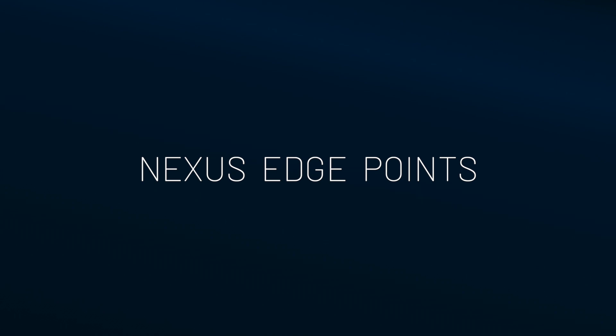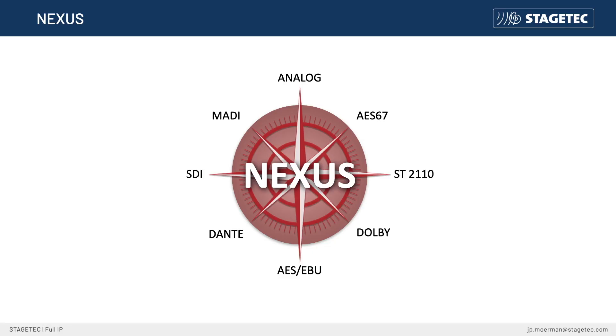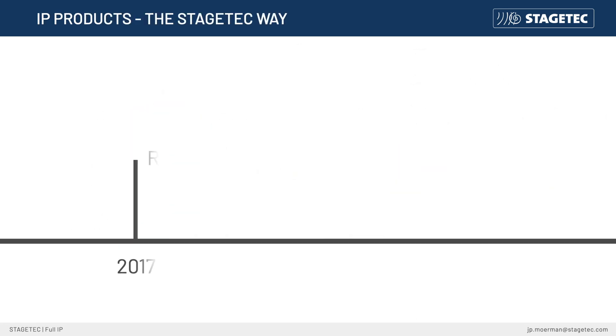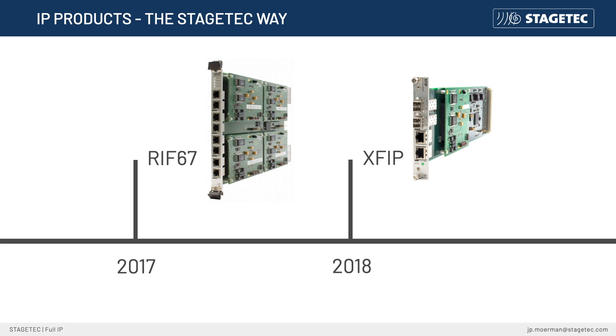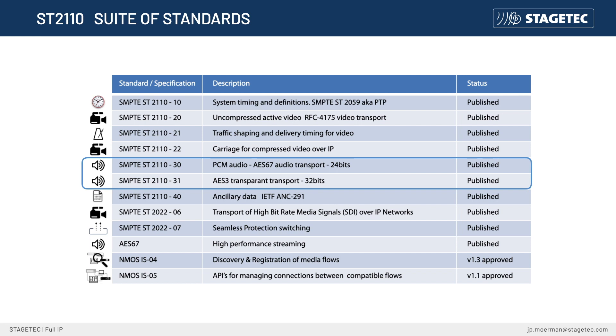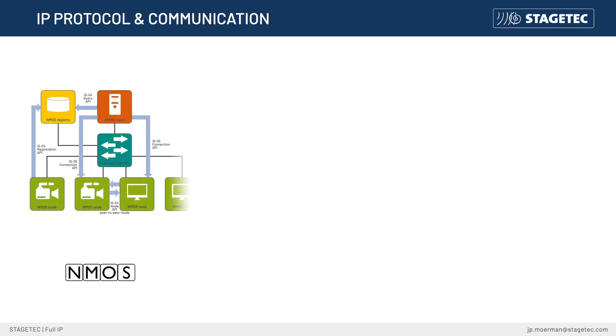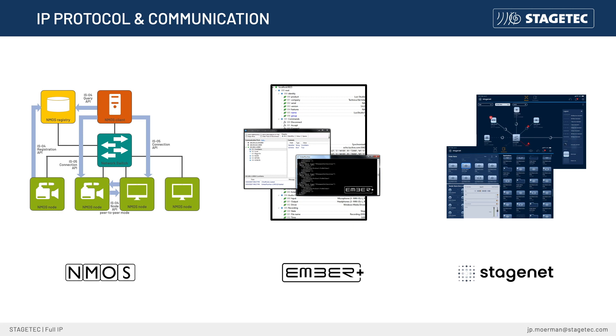Providing the ST2110 endpoints or edge points with IP audio format interfaces is not a challenge, as we provide any audio format or standard. Nexus still is a huge format converter and connection node. Since more than 10 years, we provide audio over IP formats. When ST2110 was published, we immediately provided interfaces with ST2110-30, the 24-bit format, and ST2110-31, the 30-bit or transparent version. To communicate with third-party ST2110 equipment and simultaneously manage the audio streams, NMOS can be used alongside standard protocols such as EMBER+, RTSP, and others used in the broadcast industry. Now that we know we have all the parts, we can start to build our StageTech full IP system.